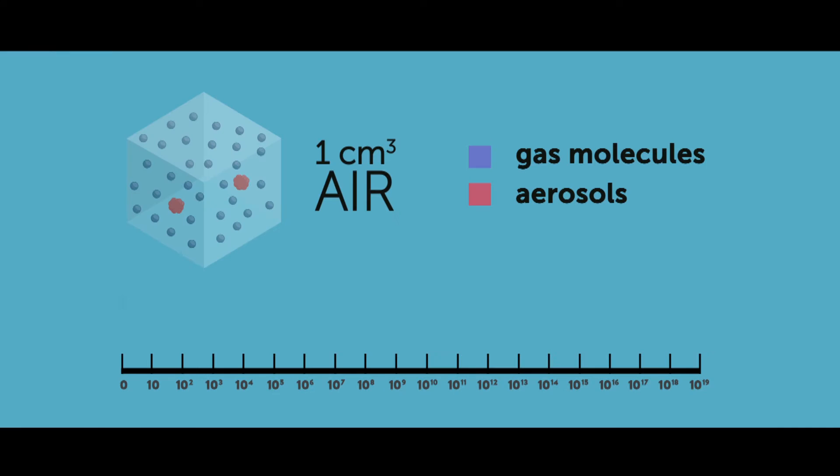A cubic centimeter of ambient air contains about 10 to the 19 gas molecules and roughly 10 to the 3 to 10 to the 6 aerosol particles.